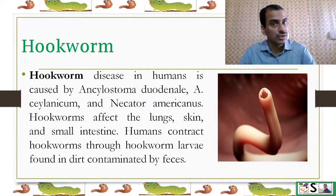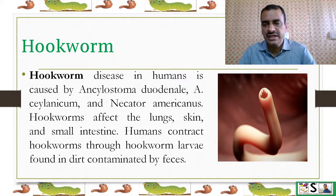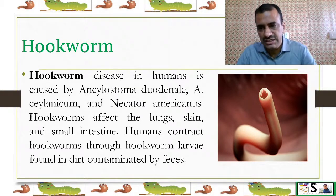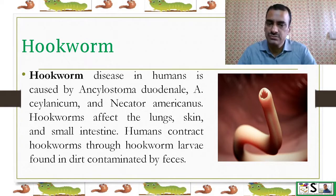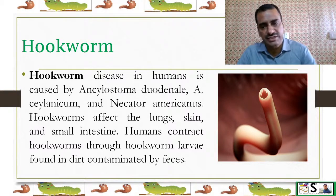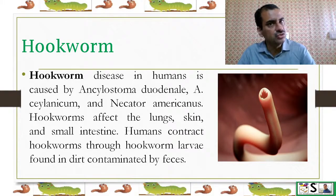Now, hookworm. Hookworm disease in humans is caused by Necator americanus, Ancylostoma duodenale, Ancylostoma ceylanicum, and Ancylostoma braziliense. Hookworms affect the lungs, skin, and small intestine. Humans contract hookworm through hookworm larvae found in dirt contaminated by human feces.